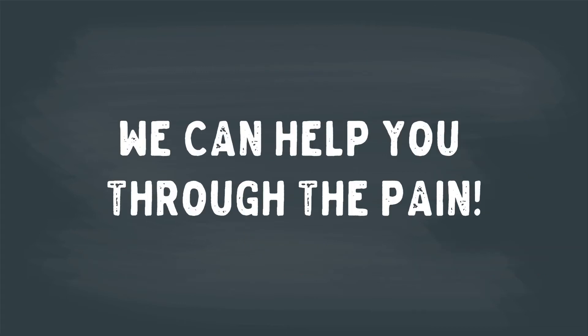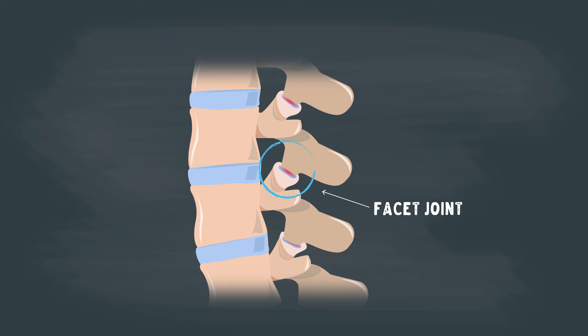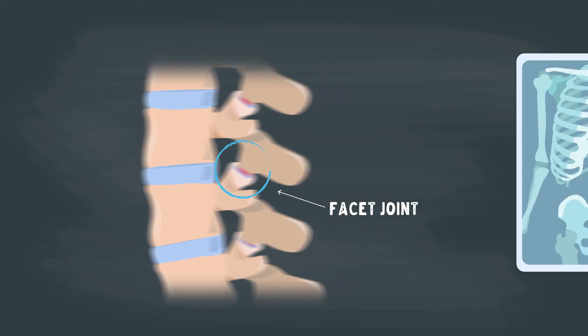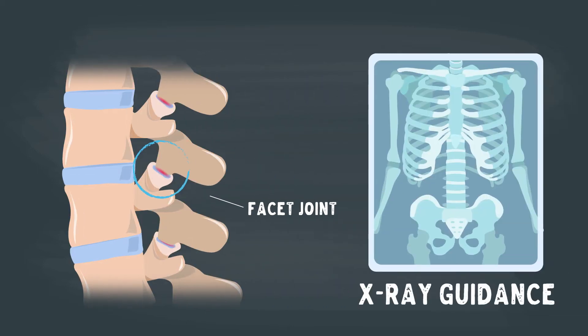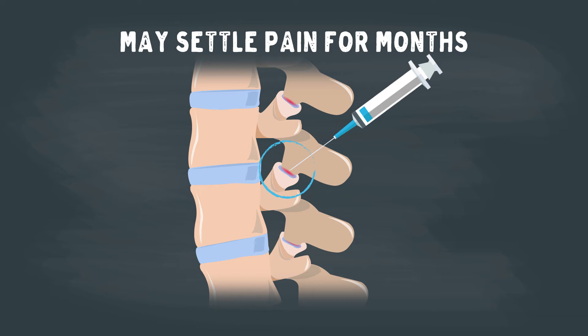However, when those joints wear down and develop arthritis, we do have ways to help you get through the pain. Like any other joint, we can insert cortisone, an anti-inflammatory, directly into the joint under x-ray guidance. This is done with a small needle under sterile conditions. This may settle the pain for months to allow your body to strengthen surrounding musculature and help with movement.